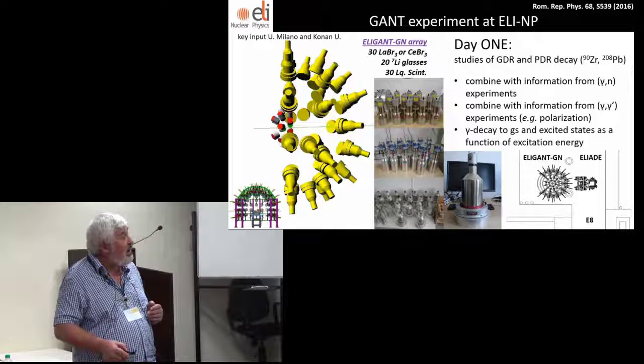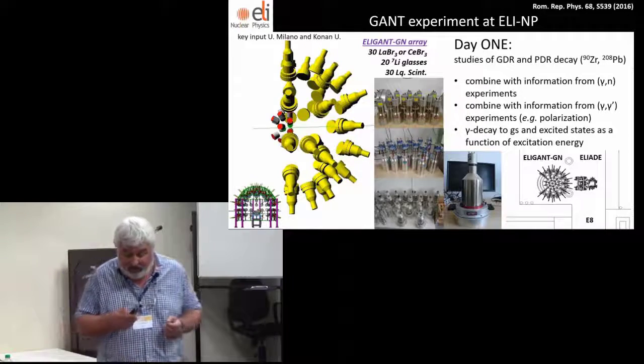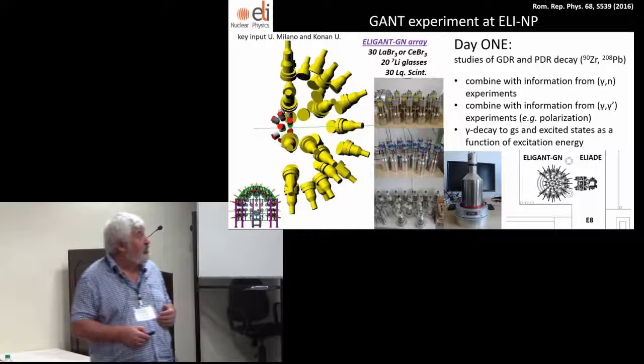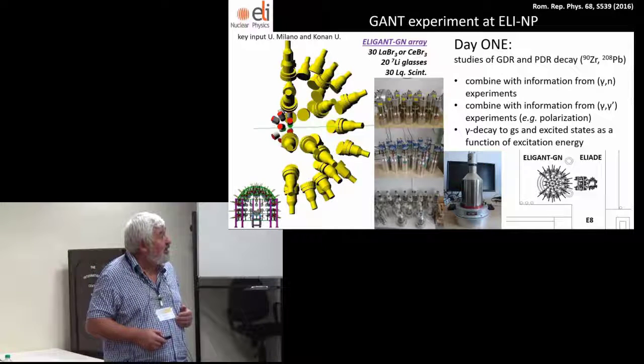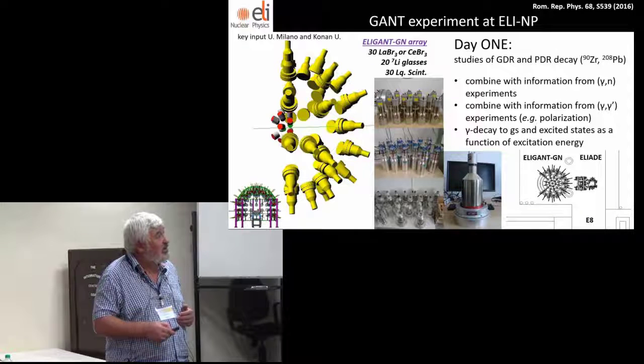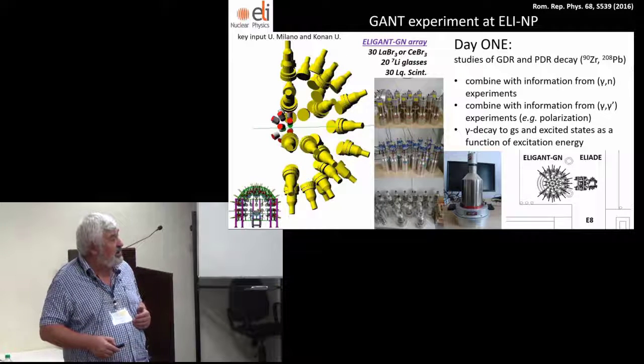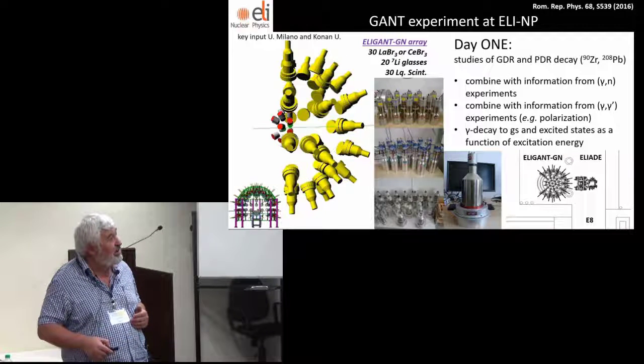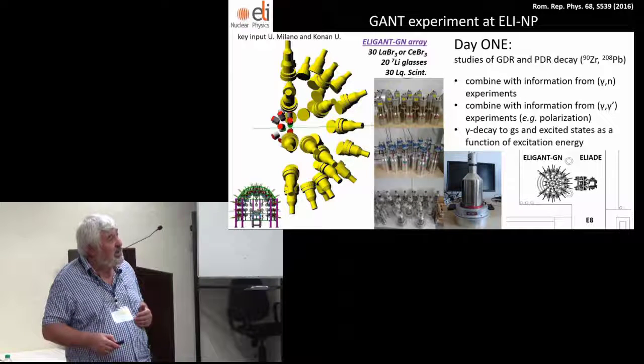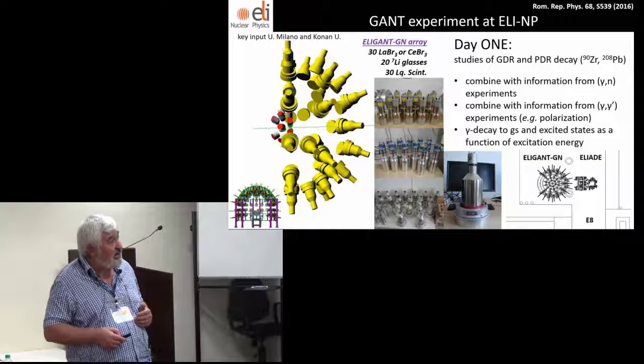We're building a 4π array of large scintillators. What you can see here is the biggest collection of 3-by-3 inch scintillators, lanthanum bromide and sodium iodide. We also have lithium-6 glasses and liquid scintillator neutron detectors. With this we want to study giant and pygmy resonance decays and we'll combine information from gamma-n reactions.